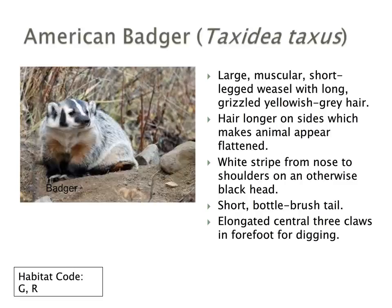The American badger is a large, muscular, short-legged weasel with a very grizzled appearance — its hair is a mixture of white and brown grizzled together. The forelimbs are slightly reddish at the front and it has a very short bottle-brush tail. Its face is marked with unique striping patterns: a white stripe right down the middle, followed by black and white alternating patterns. Elongated central three claws in the forefoot are present for digging in soft sandbanks.